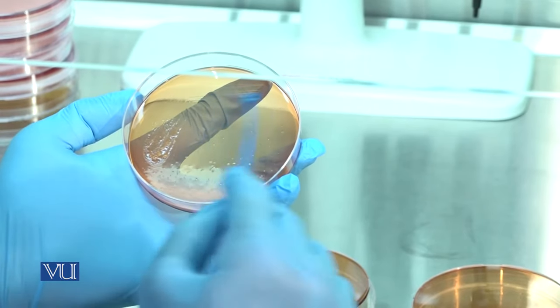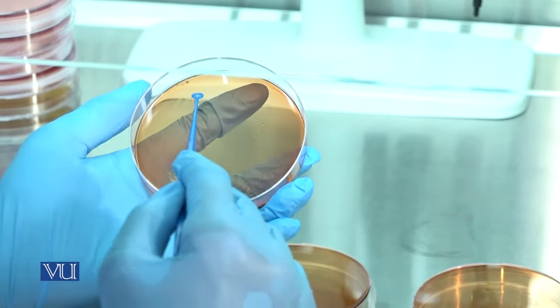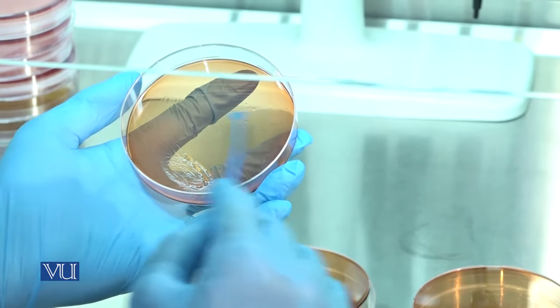Now rotate the petri plate 90 degrees and streak area 2. Again rotate the dish at 90 degrees and streak area 3 as being shown.